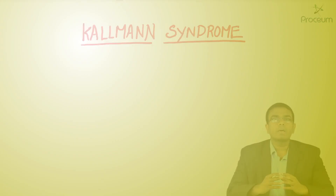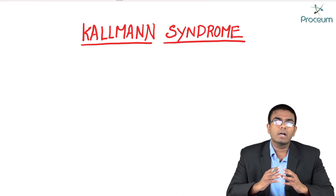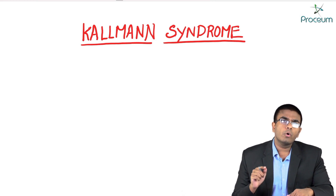Hello students, let's discuss Kallmann syndrome. Kallmann syndrome is an example of hypogonadotropic hypogonadism.